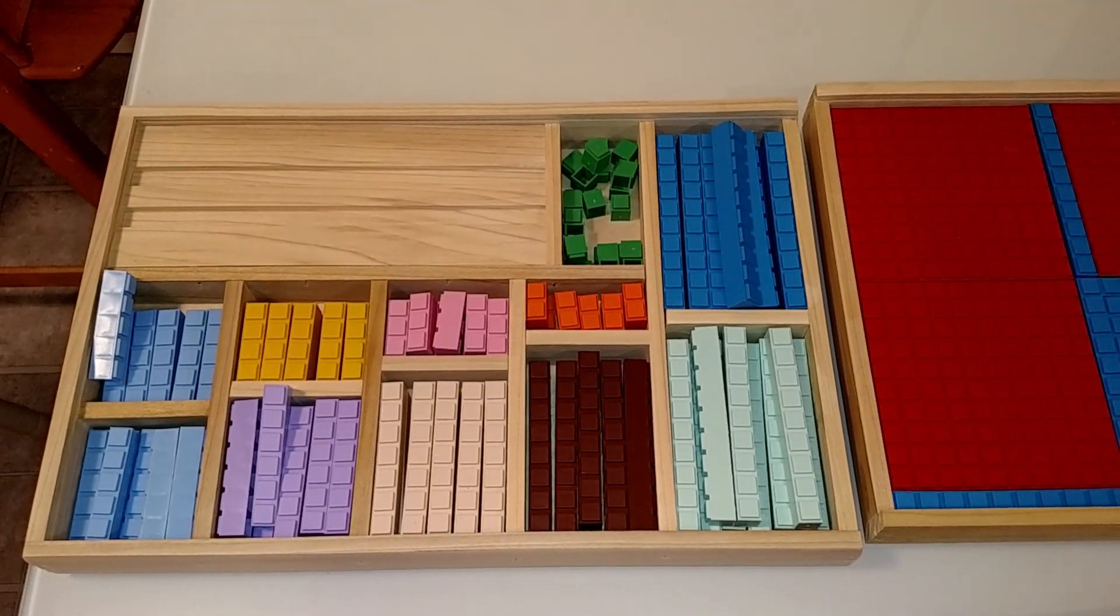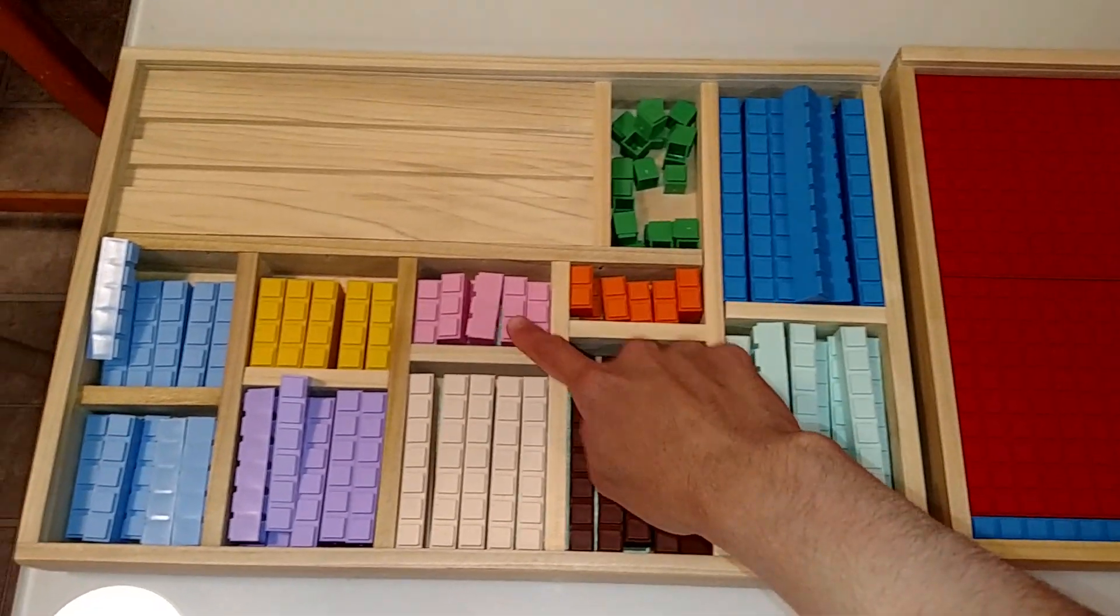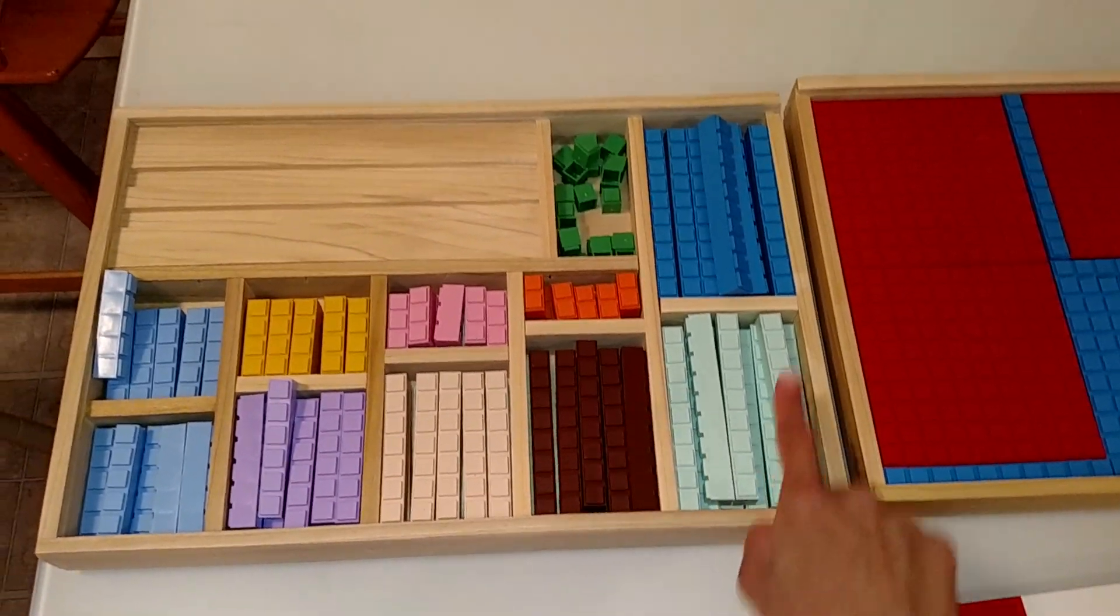The blocks, each number represents a different color: so 1 green, 2, 3, 4, 5, 6, 7, 8, 9 and 10.